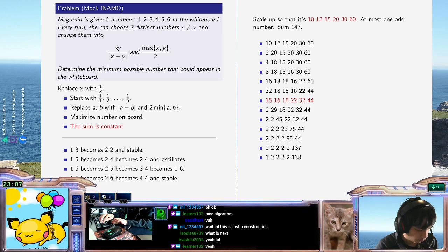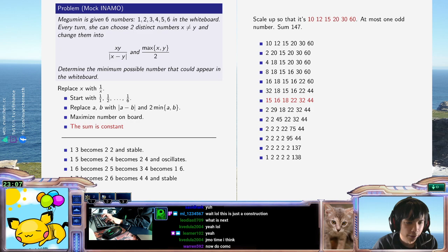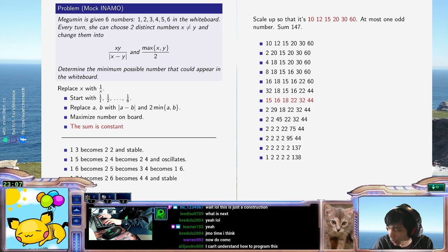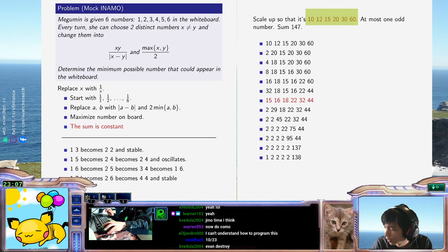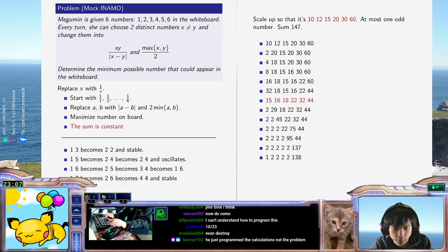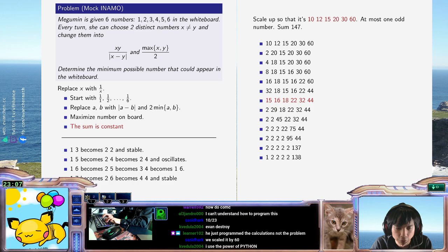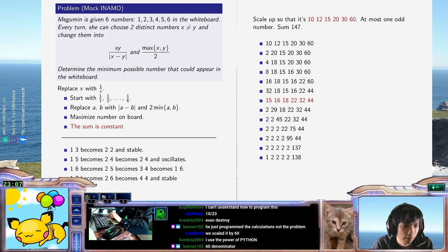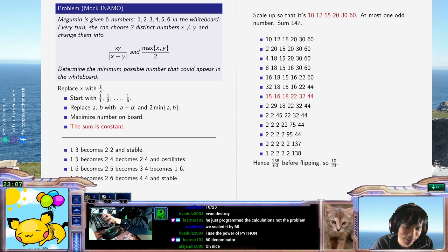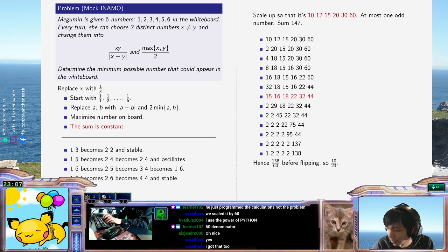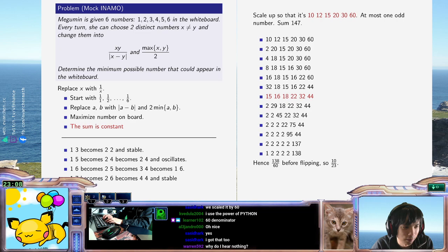We did it. Final answer is whatever - we scaled up by 60. So it's 138 over 60 before flipping. So the answer is 60 over 138. Final answer, 10 23rds. Is that correct? Did I mess anything up? No, 10 23rds is definitely wrong. Wait, no, 10 23rds. Yeah, that's the answer.